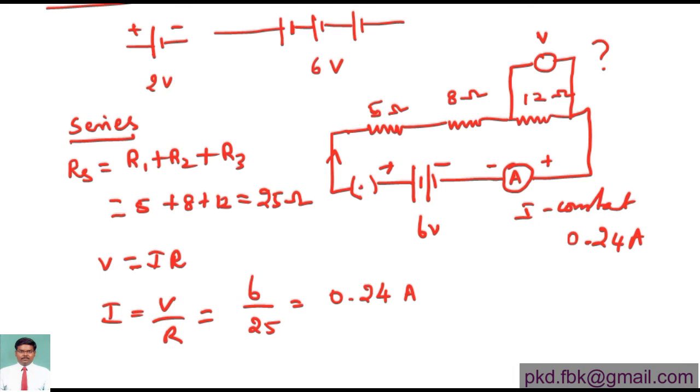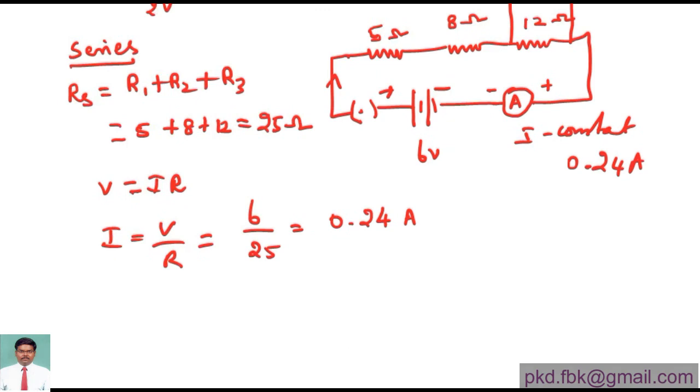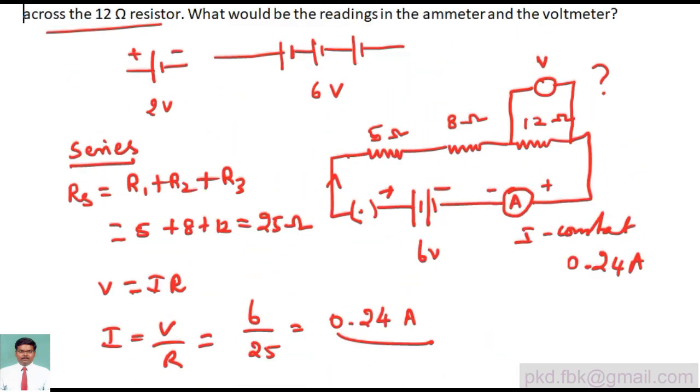Next, I have to calculate the potential difference across the twelve ohm resistor. Once the current is calculated, the other things become very simple. From Ohm's law, V equals I into R. The current in the circuit is 0.24 amperes and the resistance here is twelve. Simply by multiplying the two, we get 2.88 volts as the potential difference across the resistor.